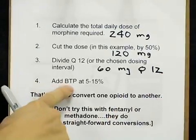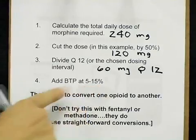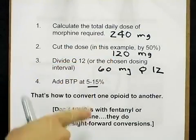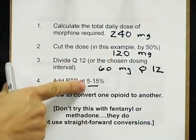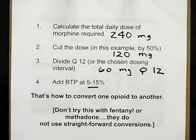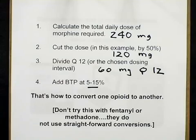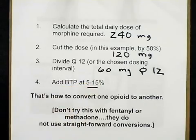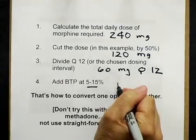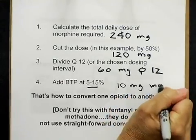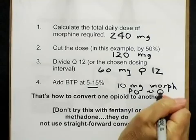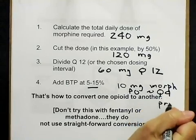Now we're going to add breakthrough pain at 5 to 15%. The breakthrough pain dose is taken from the total daily dose, which is 120 milligrams. Figuring 10% — right in the middle — gives us 12 milligrams. Morphine immediate release doesn't come as 12 milligrams, so we'll use 10 milligrams. That's within our 5 to 15% range — that's why you have a range, so you can pick an available dosage form. So we use 10 milligrams of morphine orally, approximately Q4 hours, as PRN breakthrough dosing.